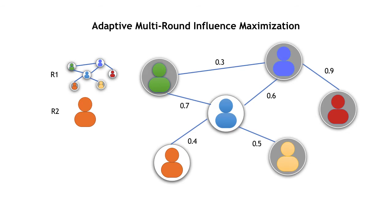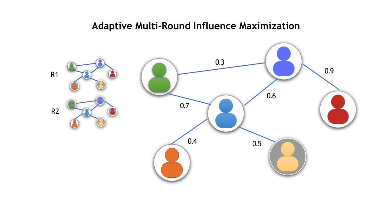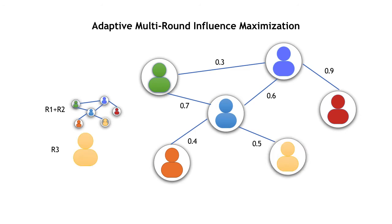After we receive the result of the second round, we combine the results of the first two rounds and count all active nodes, which will be used for the node selection of the third round. Finally, we will have the result of the adaptive setting.